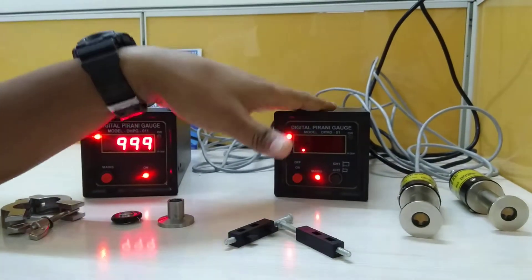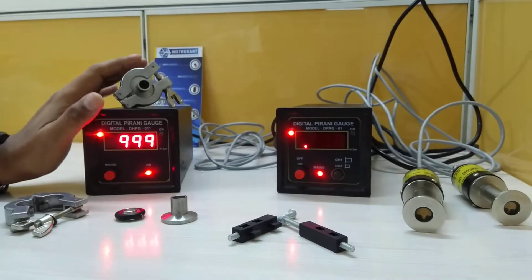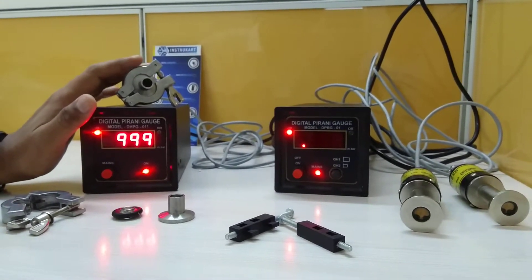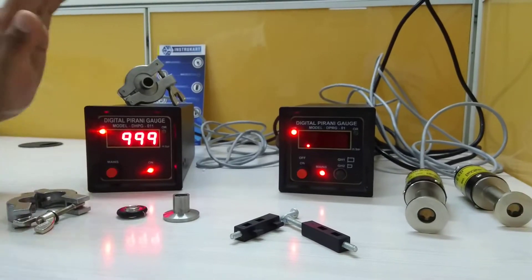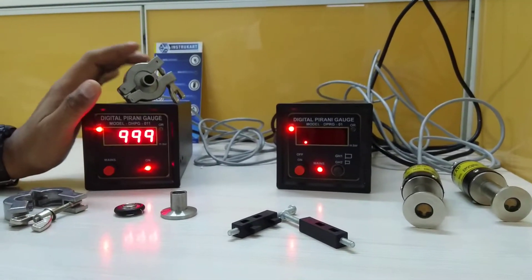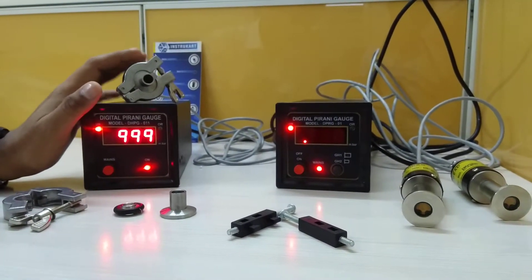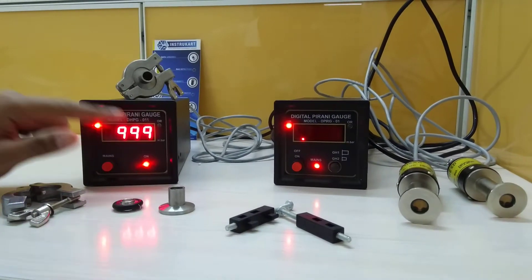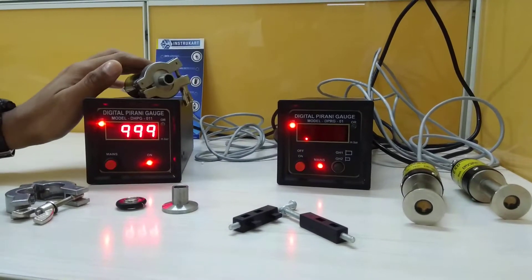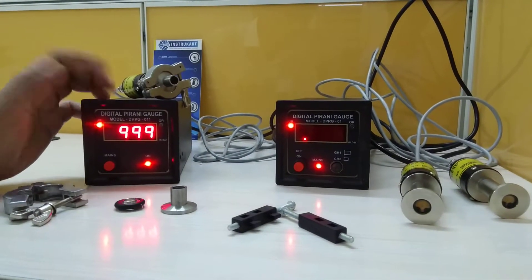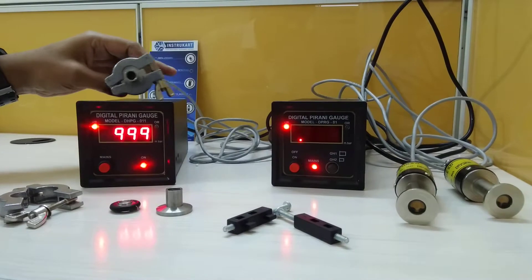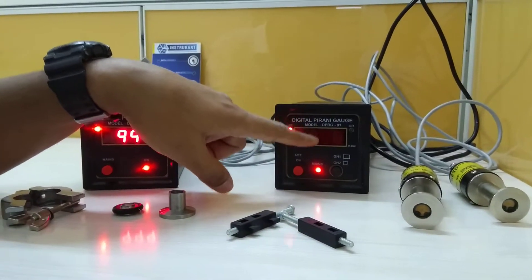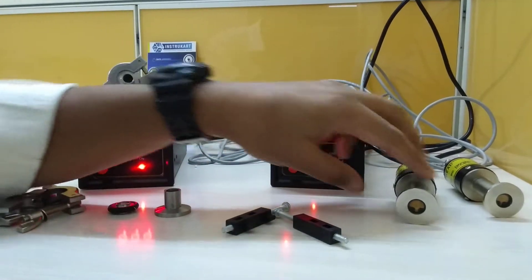This particular gauge is a normal single gauge head Pirani gauge, and this has the range of 999 to 0.001. Now, this 999 is displayed because of the open barometric condition. This display is not visible now because it is not connected to the vacuum pump.